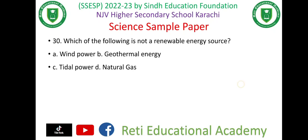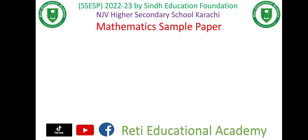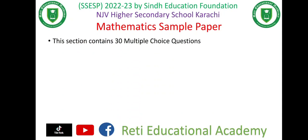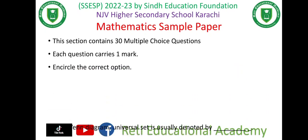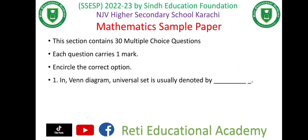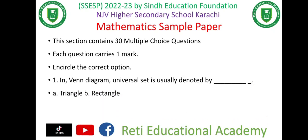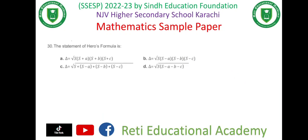Now comes the mathematics sample paper. This section contains 40 multiple choice questions — sorry, not 30, it will contain 40 — each question carries one mark; encircle the correct option. In a Venn diagram, the universal set is usually denoted by (a) triangle, (b) rectangle, (c) circle, (d) star. The right option is (b) rectangle.